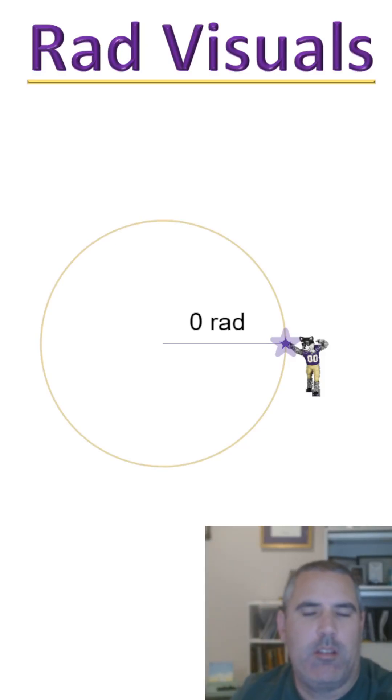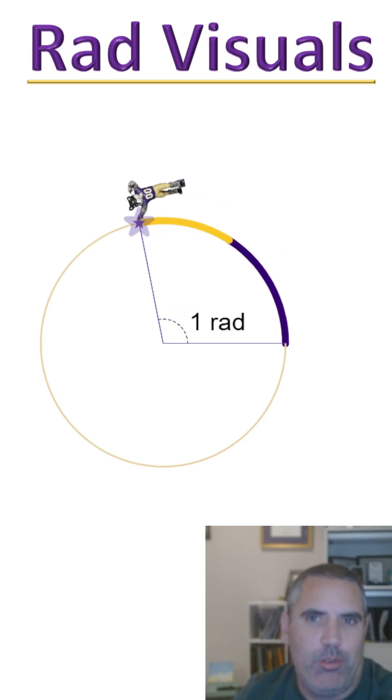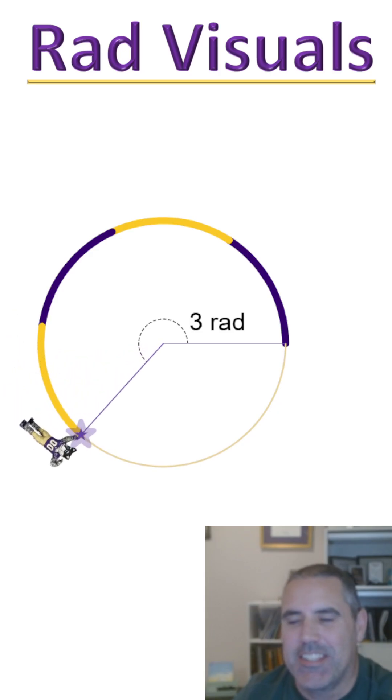Hey there math fans, Dr. Andy Loveless. I have some rad visuals for you. By rad, I mean radian. I'm so sorry for the pun. Here we go. This is deep purple, spirit gold, deep purple, spirit gold. These are the husky colors. But each of those is a radian.